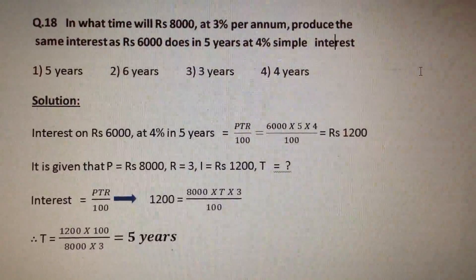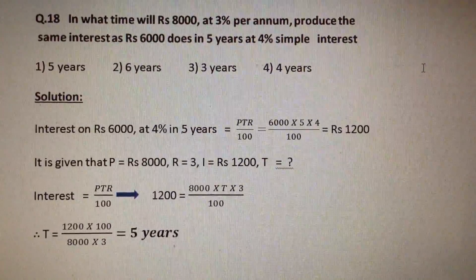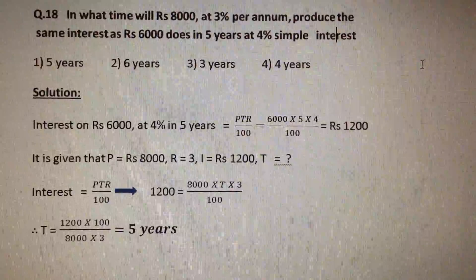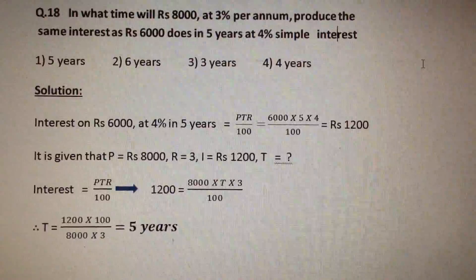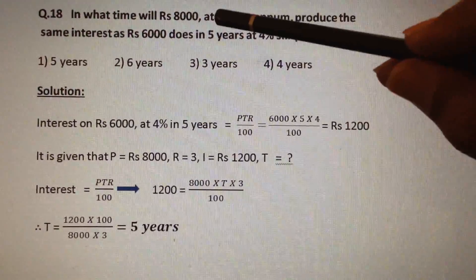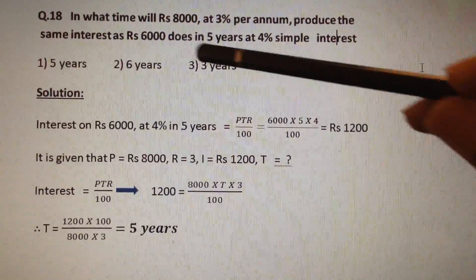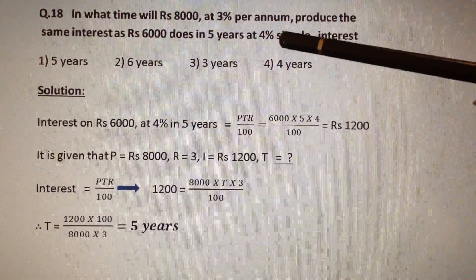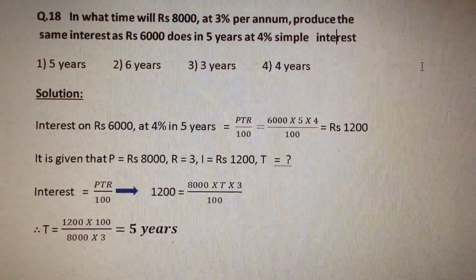In what time will Rs. 8000 at 3% per annum produce the same interest as Rs. 6000 does in 5 years at 4% simple interest? This is a simple interest problem with two cases. The first case is Rs. 8000 at 3% interest rate. In the second case, the principal amount is Rs. 6000, the term is 5 years, and the rate of interest is 4%. In both cases, the interest produced is the same.